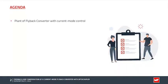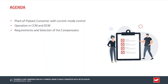In today's webinar we will start by studying the characteristics of the plant, also known as the control-to-output transfer function of the flyback converter with peak current mode control, for operation in both continuous conduction mode (CCM) and discontinuous conduction mode (DCM). Based on the plant characteristics, we will set the requirements for the compensator and select a compensator type. For the design shown, we will select an optocoupler-based type 2 compensator and learn its principle of operation and circuit design steps.